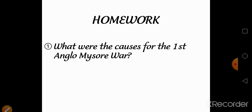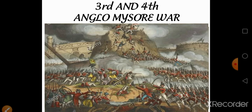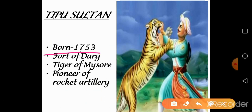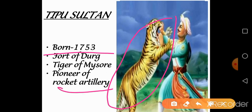Now let's move to today's topic — the 3rd and 4th Anglo-Mysore Wars. First, you have to know a few things about Tipu Sultan. He was born in 1753 near Mysore and was also called the Tiger of Mysore. Durg Fort in the Nilgiris is his famous fort. Tipu Sultan was the ruler of the Kingdom of Mysore and a pioneer of rocket artillery.